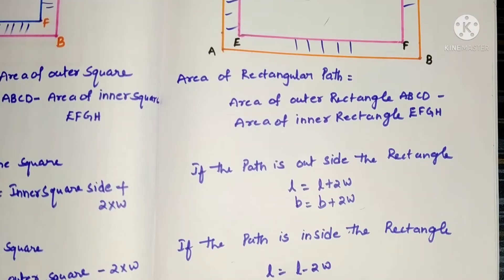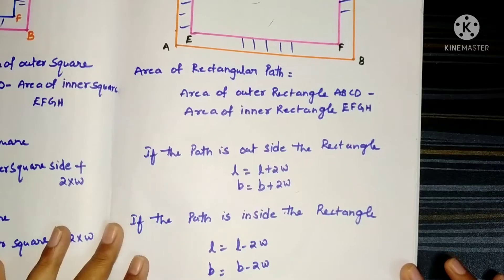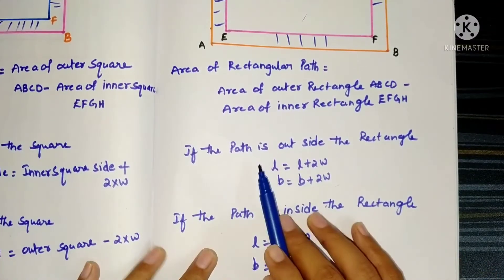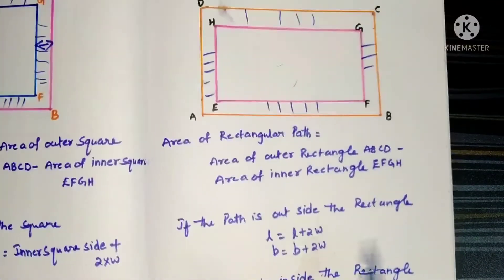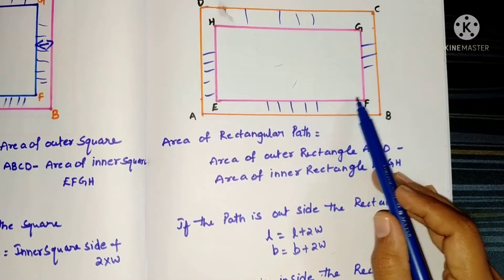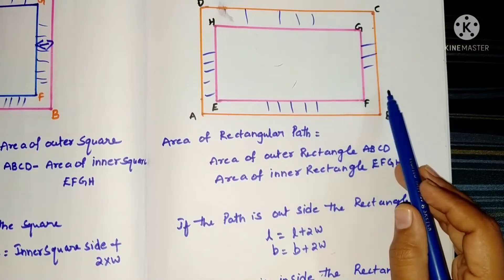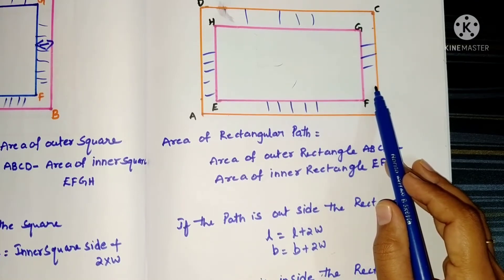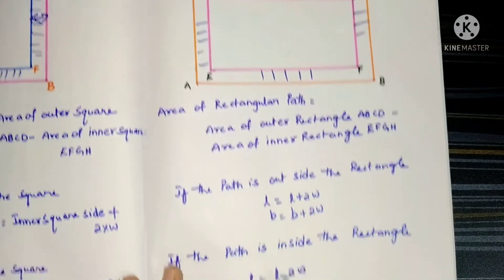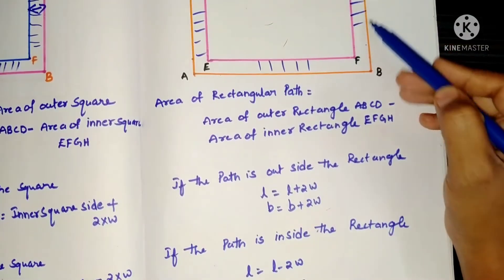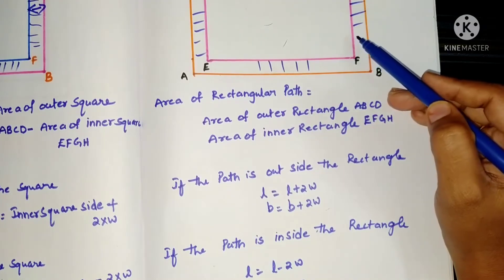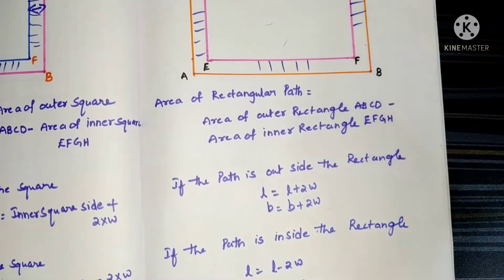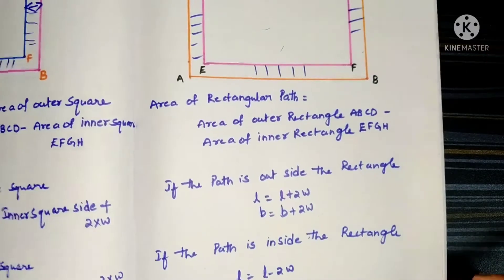To summarize: if the path is outside the rectangle, we know the inner rectangle length and we need to find the outer side — add 2 times the width. If the path is inside, we know the big rectangle length and subtract to get the small rectangle length — subtraction.